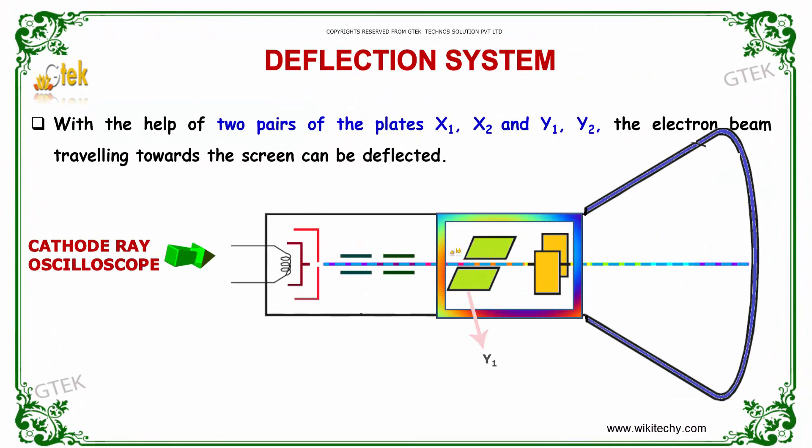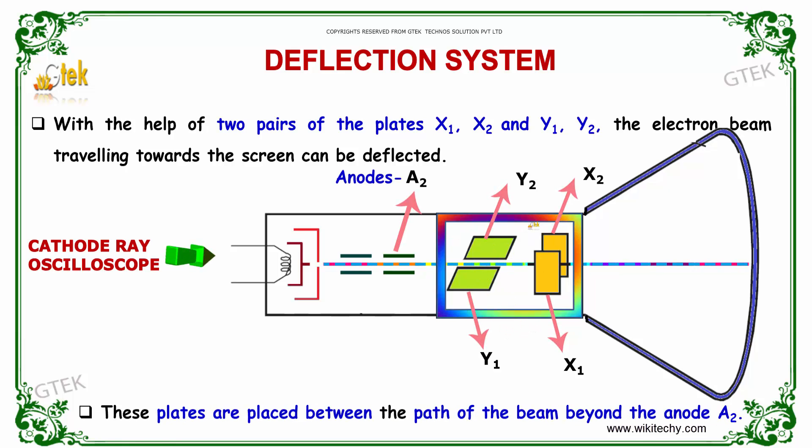Considering the second section, that is deflection system. This one with the help of two pairs of plates, X1, X2, Y1, Y2. This has been indicated here very clearly. So the electron beam travelling towards the screen can be deflected. So these plates are placed between the path of the beam beyond the anode 2.